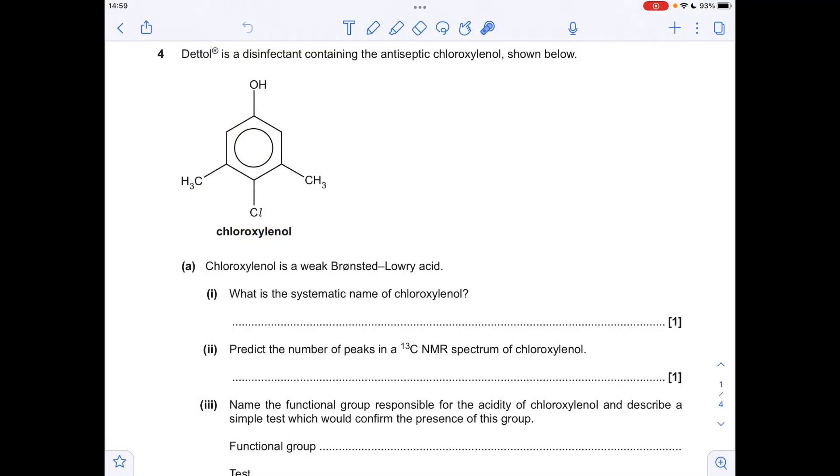So the systematic name for this molecule, well essentially it's a phenol. We've got that phenol group there and we've got a chlorine on position 4 and methyl groups, two methyl groups at positions 1, 2, 3, 4, 5. So its systematic name is 4-chloro-3,5-dimethyl-phenol. Chlorine comes before methyl because of the alphabet rule.